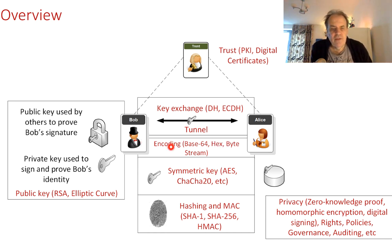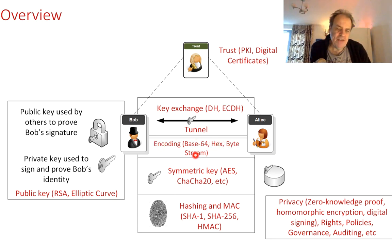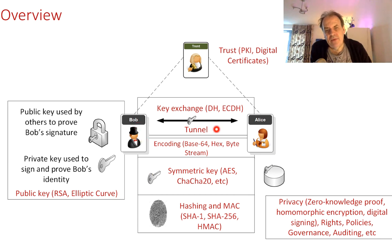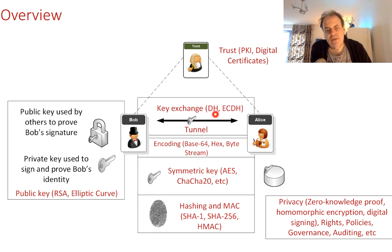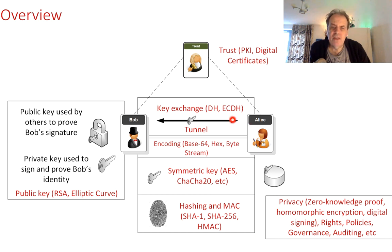We also need to understand encoding formats — how to convert and send data and keys over the network, looking at formats such as Base64, hex, and byte streams. We also need to establish what key to use for the tunnel. If Eve finds out the key, we need to negotiate a new one — that involves key exchange. The core method is often Diffie-Hellman or elliptic curve Diffie-Hellman. When you connect to a secure site like Amazon, Bob and Alice communicate to agree on a key, such that if one key is compromised, the others remain safe.